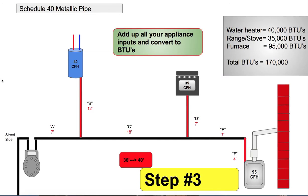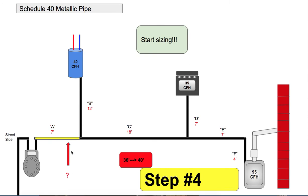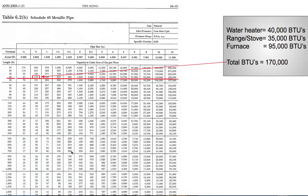So the next step, you add up all of your appliances and convert to BTUs — you'll be adding up the BTU input of the appliance, not the output. Water heater, range, and furnace: 40, 35, and 95 gives you 170,000 BTUs. So section A of the gas main carries 170,000 BTUs in the 40-foot length column, and the pipe size comes out to 3/4 inch — that section of the main is 3/4 inch.